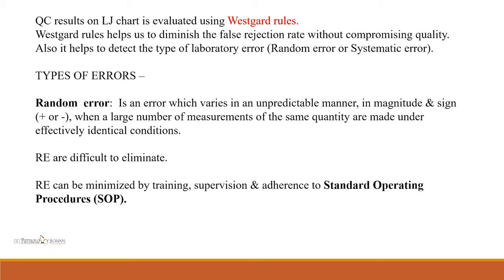These results are evaluated using Westgard rules. Westgard rules help to diminish the false rejection rate without compromising quality, and they help detect the type of laboratory error — whether random or systematic. A random error is an error which appears in an unpredictable manner, unpredictable in its magnitude and sign, even when a large number of measurements of the same quantity are made under identical conditions. Random errors are difficult to eliminate.